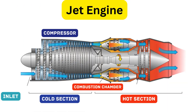The combustion chamber, also called the hot section, receives high-pressure air from the compressor. Here, fuel is injected and ignited, producing a super-hot, high-pressure stream of gases. This is where the magic happens — chemical energy from the fuel turns into kinetic energy.